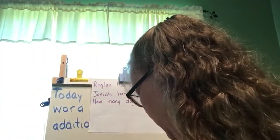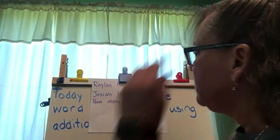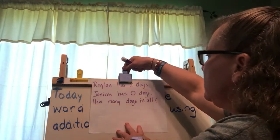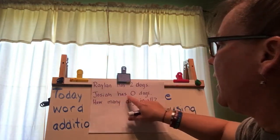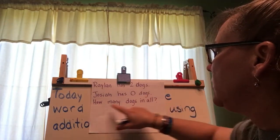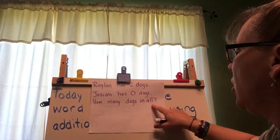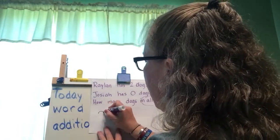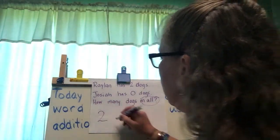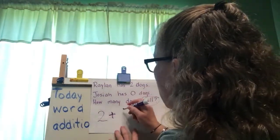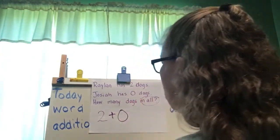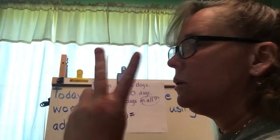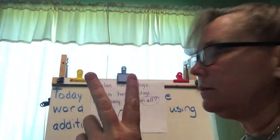Let's look at another word problem. This one says Raylan has two dogs. Josiah has zero dogs. How many dogs in all? 'In all' means addition. So Raylan had two dogs and then I'm going to add Josiah's dogs — he had no dogs — and that equals how many? Two plus zero is two.